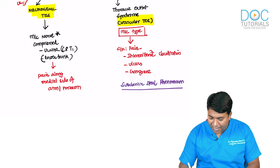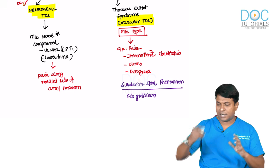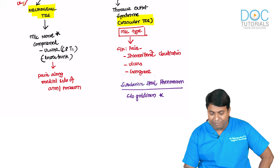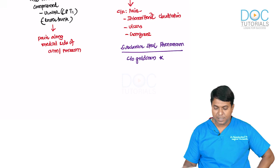The patient complains of giddiness when starting to work with the hands — for example, washing clothes or writing — because blood is not flowing to the brain. It is diverted via the vertebral artery collateral to the upper limb. This subclavian steal phenomenon is a feature of vascular thoracic outlet syndrome.